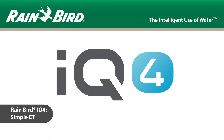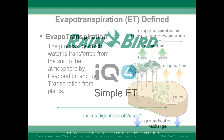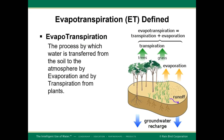Simple ET is a water-saving feature exclusive to IQ4. It allows users to program their controllers to receive weather data and adjust station run times based on the previous day's evapotranspiration. Evapotranspiration, known as ET, is the process by which water is transferred from the land to the atmosphere by a combination of evaporation from the soil and other surfaces and by transpiration from plants.